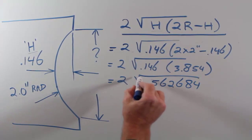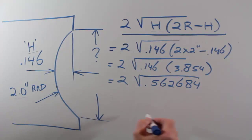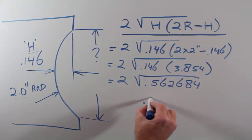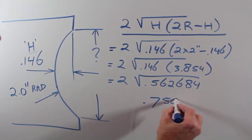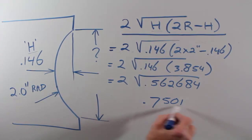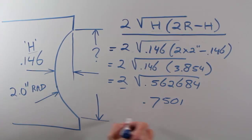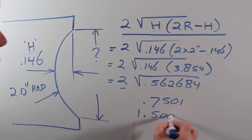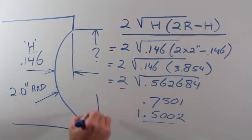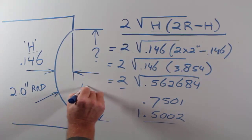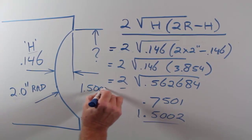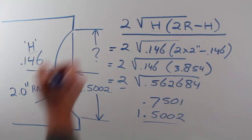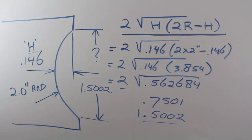The next step is to take the square root of 0.562684, which gives us 0.75501. We multiply that times two, which ends up being 1.5002. So the diameter right here where the radius meets the face is 1.5002 inches — that's the diameter we're going to be using in our program.